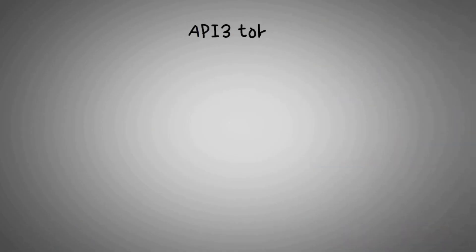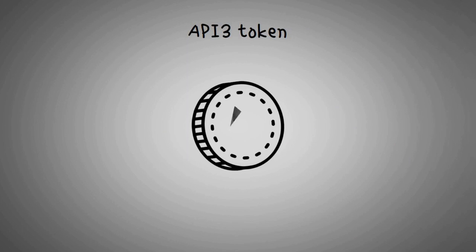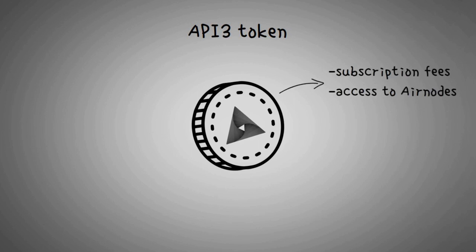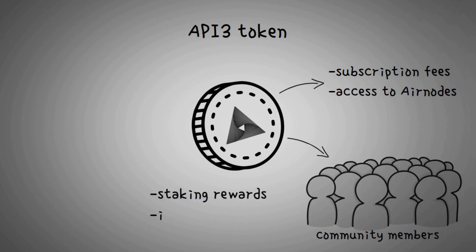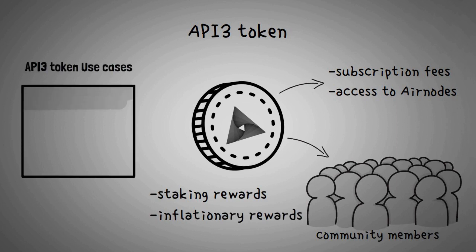Now let's look into the API3 token. The native utility token of API3 is the API3 token. This currency can be used to pay for subscription fees on dApps and also grants users access to Airnodes, which are part of a decentralized network that provides APIs required by developers. Using the API3 token, all community members will be able to participate in governing and increasing the value of their decentralized network. The project incentivizes participation by paying out staking rewards and inflationary rewards for those who stake their tokens in the insurance contract.